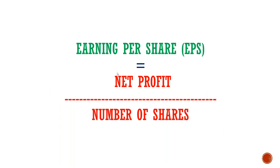What is earnings per share? If we calculate the net profit per share, then we have earnings per share. The formula is: net profit divided by number of shares.